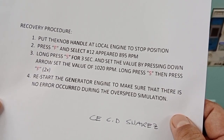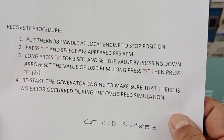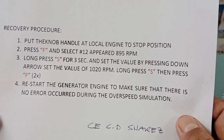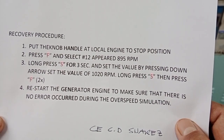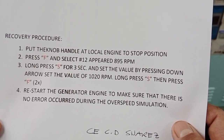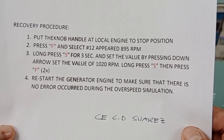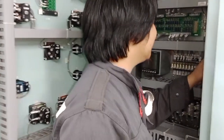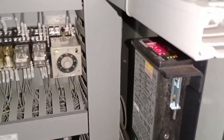For the recovery procedure: number one, put the knob handle at local engine side to stop position. Number two, press F and select number 12, set to 895 RPM. Number three, long press F for 3 seconds and set the value by pressing down arrows to set the value of 1020 RPM, long press F, then press F two times. Number four, restart the generator engine to make sure there is no error during the overspeed simulation. The actor for the overspeed generator test is Second Engineer Commander. We are conducting the overspeed generator engine simulation test.